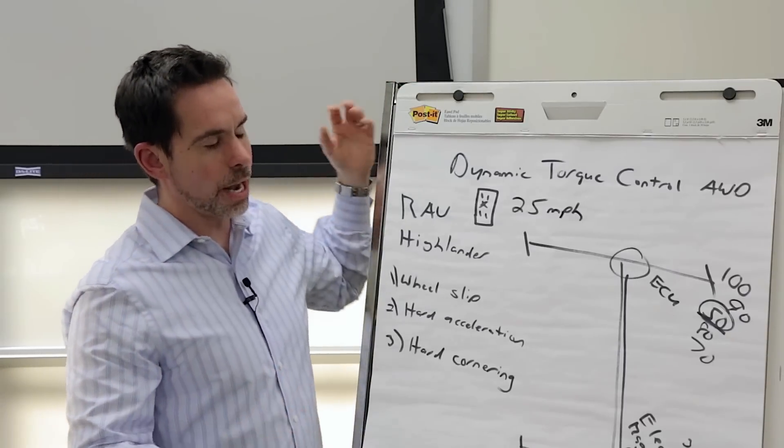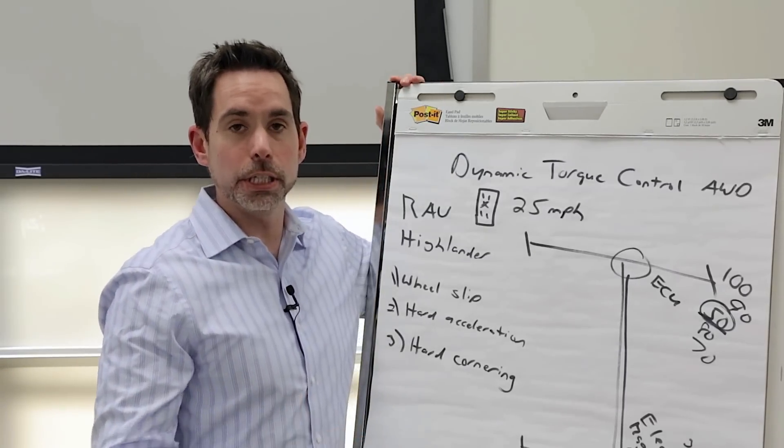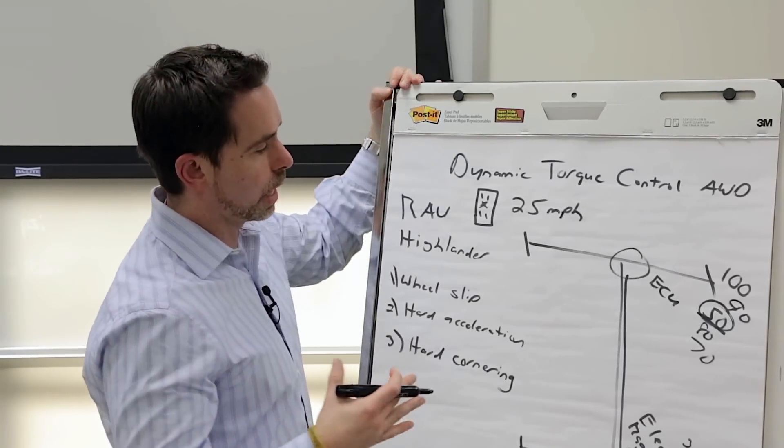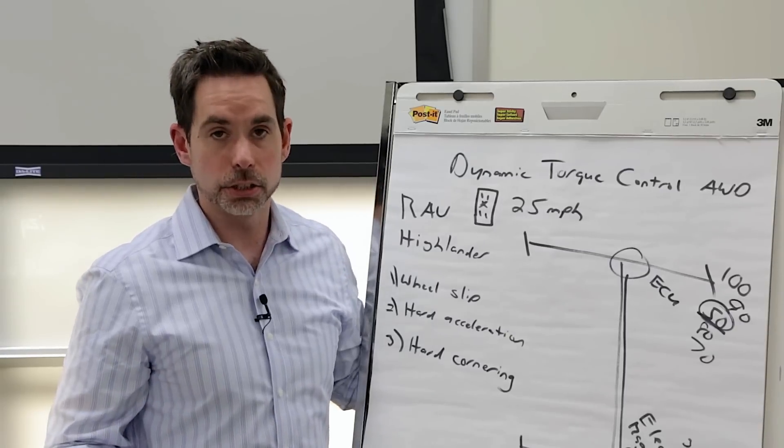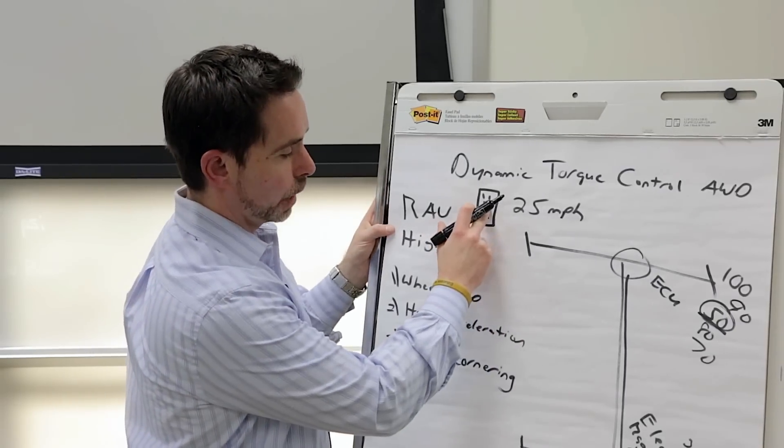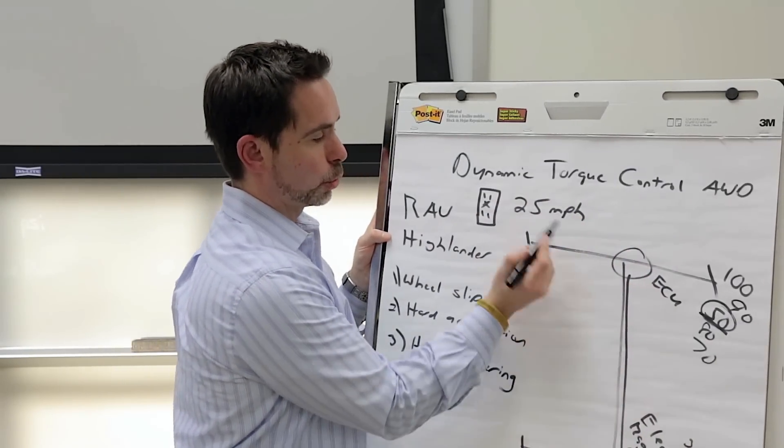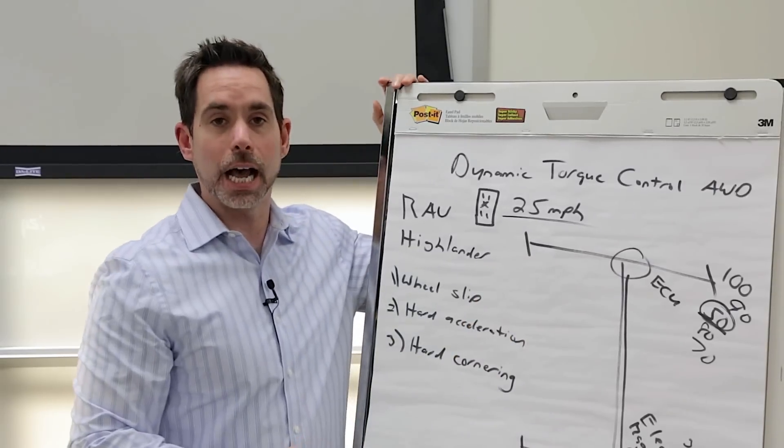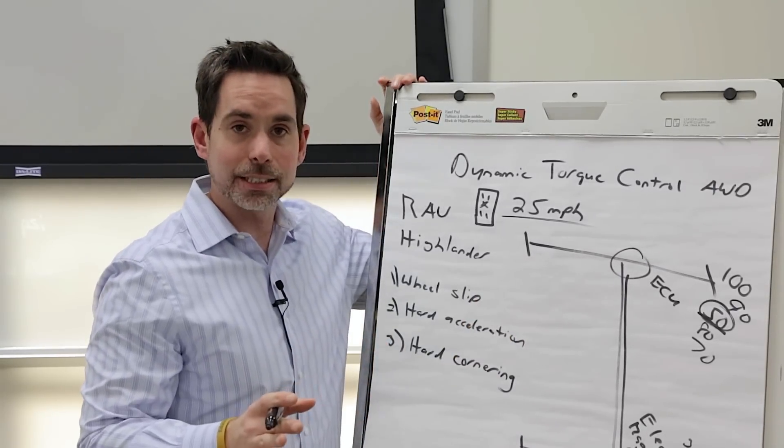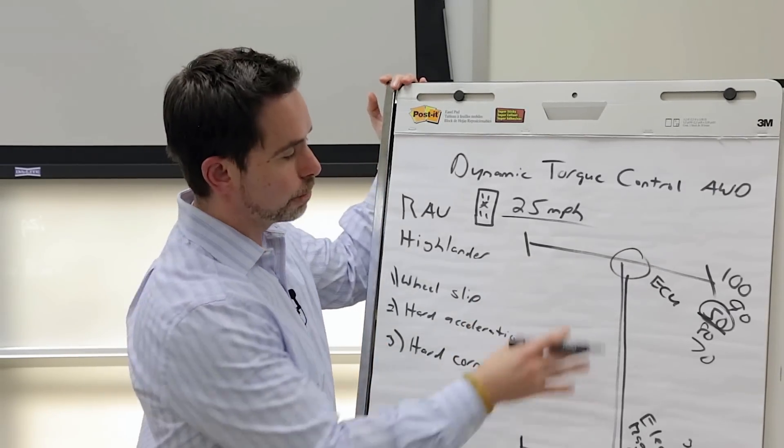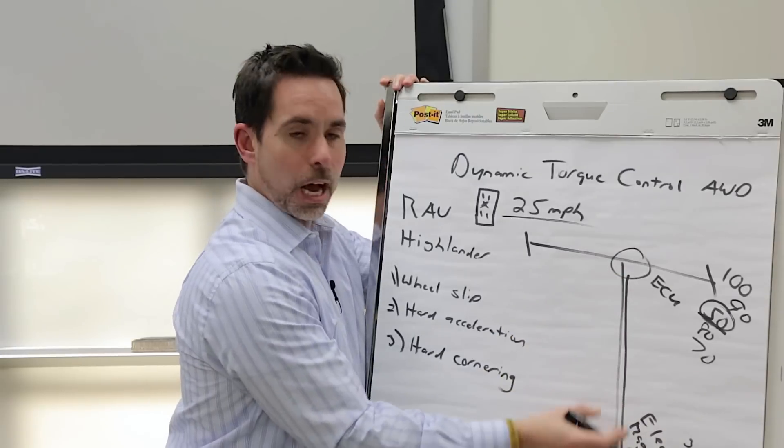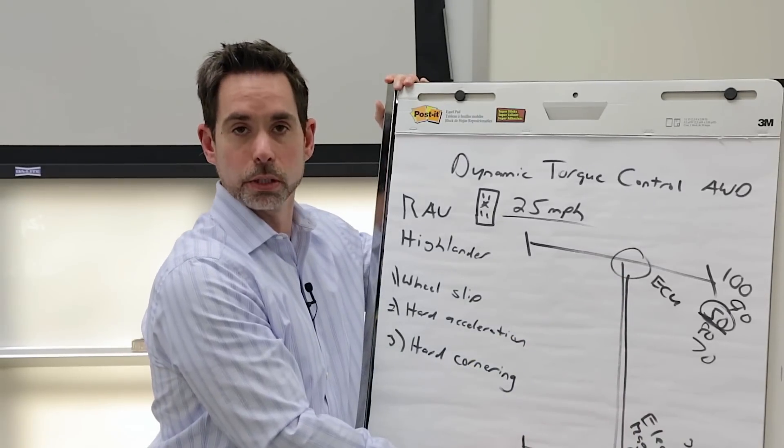So, let's say my driveway isn't shoveled or plowed yet, my street isn't shoveled or plowed yet, or I'm just getting stuck in the snow. I can hit this button and I get full-time all-wheel drive up to 25 miles an hour. If I hit 26, I still have all-wheel drive but the vehicle's going to determine how much power I'll get to my rear wheels.